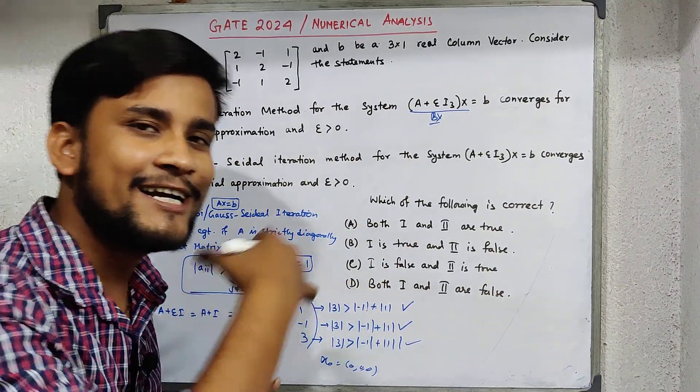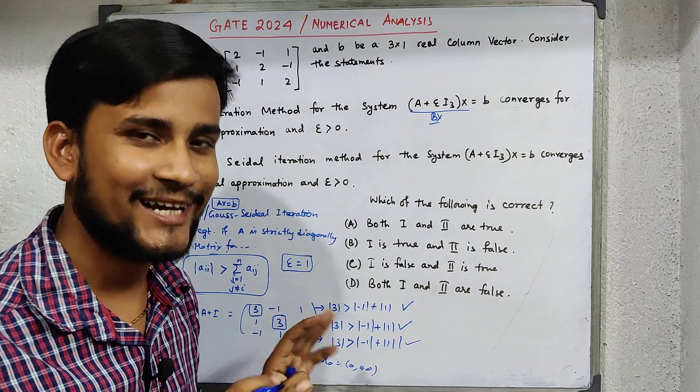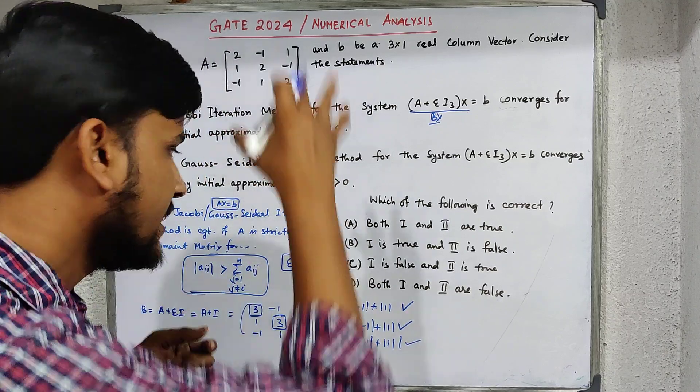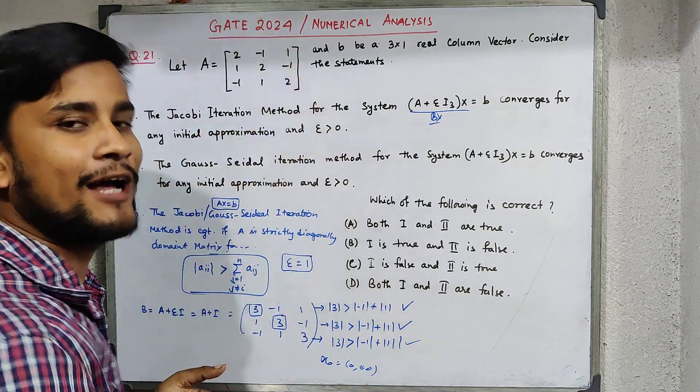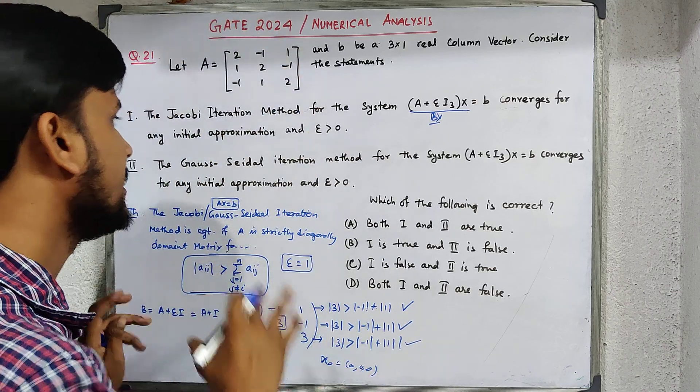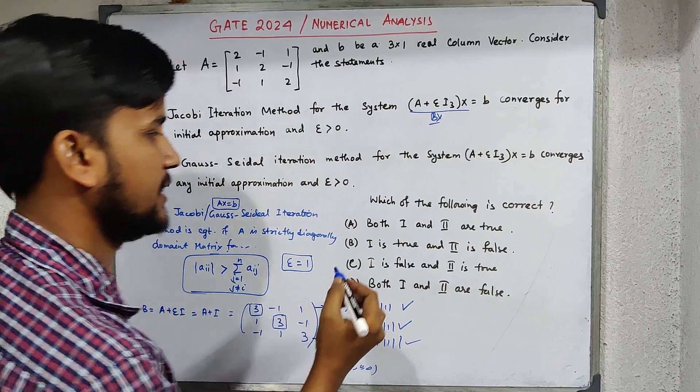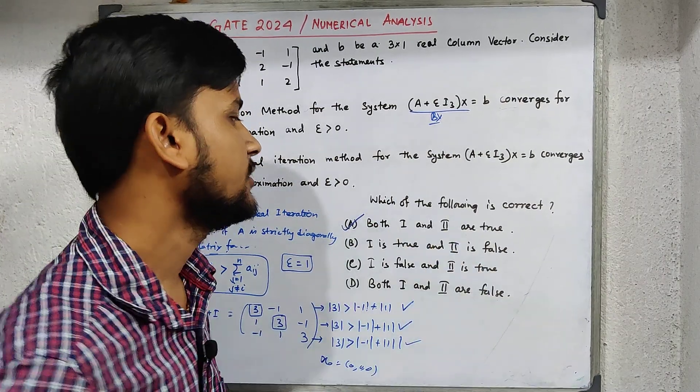You can go and check my numerical analysis lecture series, you will get all the concepts about Jacobi matrix and so on regarding these things. This means both are correct, that means both options A and B are true. This is the solution.